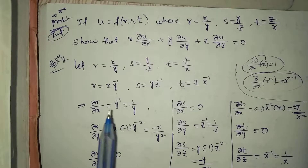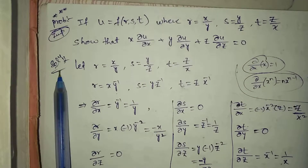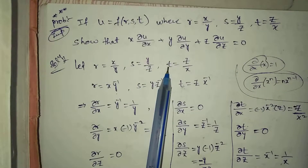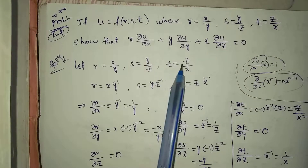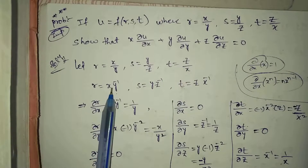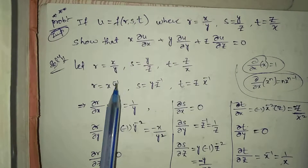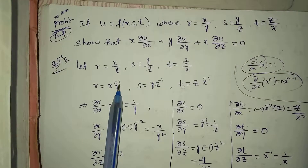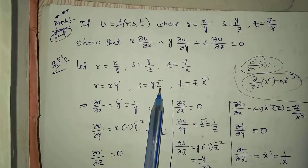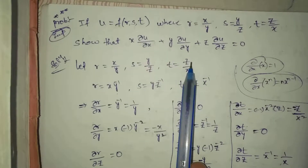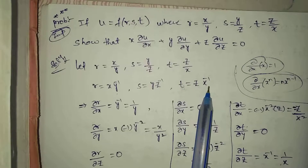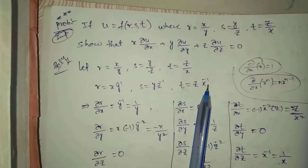Solution: Let r = x/y, s = y/z, t = z/x. We rewrite these as: r = x·y⁻¹, where 1/y is written as y⁻¹; s = y·z⁻¹, where 1/z is written as z⁻¹; and t = z·x⁻¹, where 1/x is written as x⁻¹.